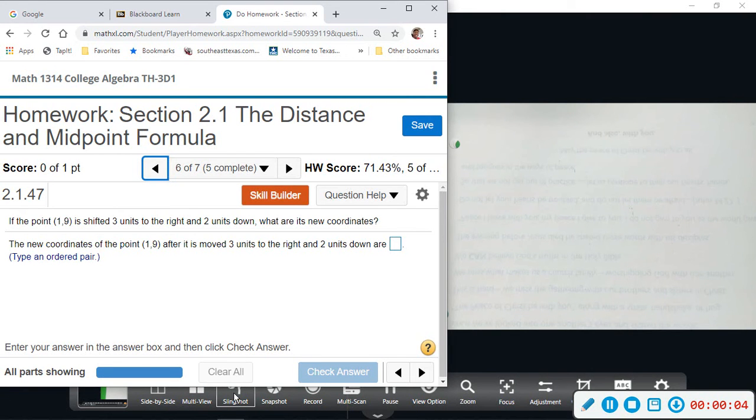Alright, number six. We're given a point (1, 9) and we want to know if it is shifted three units to the right and two units down, what are the new coordinates?